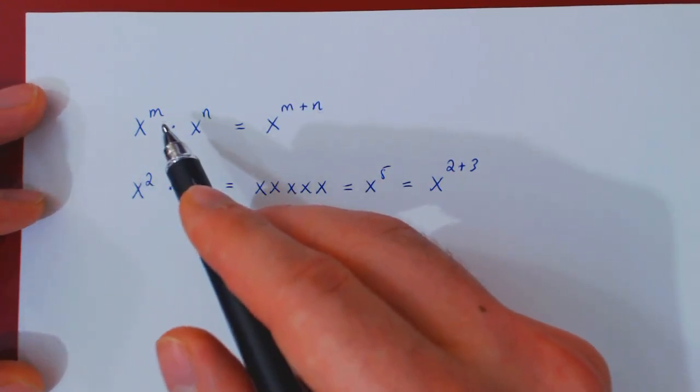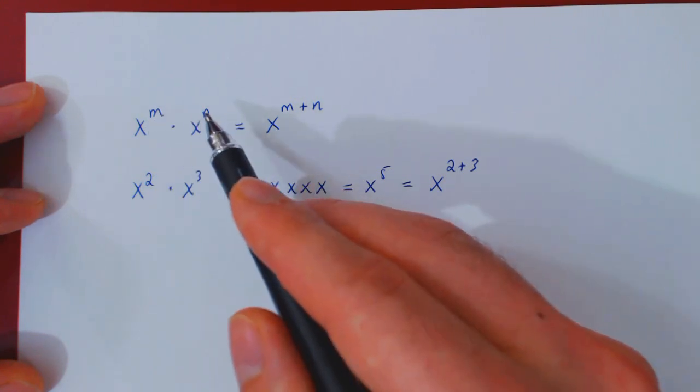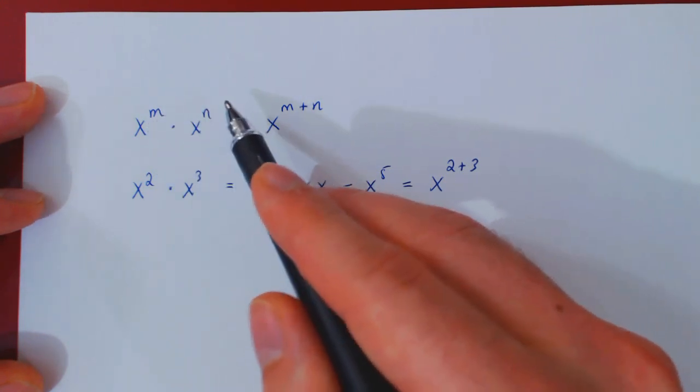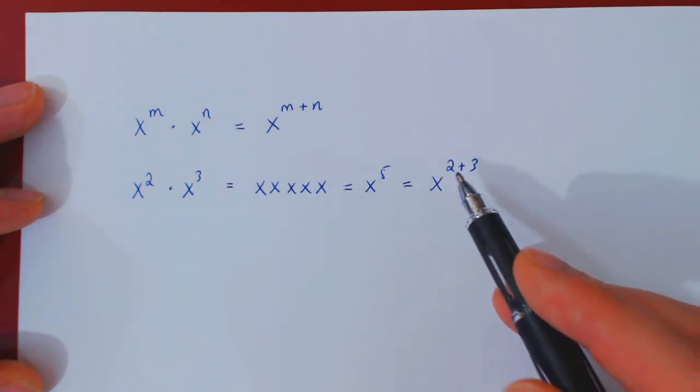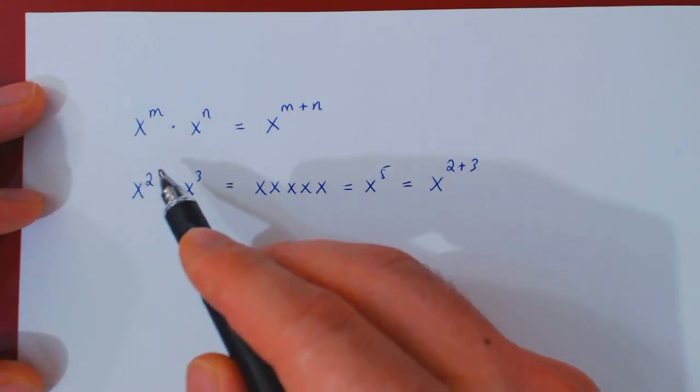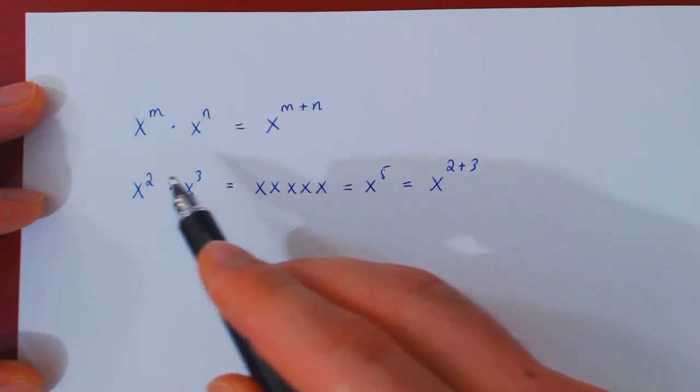Now, this is true, as I've said before, for any choice of real numbers for m and n. If you forget this property, you can easily re-derive it, or at least verify it with a simple choice of exponents, 2 and 3.